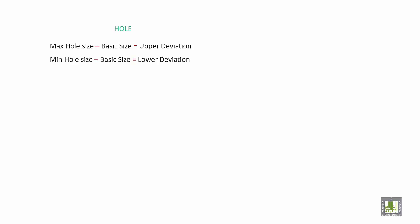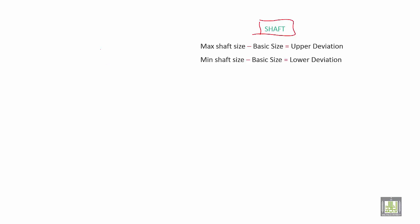When we talk about the hole system and shaft system, if we take the hole, the upper deviation will be maximum hole size minus the basic size which is the nominal. And the lower deviation: minimum hole size minus the basic size which is the nominal. Here the upper deviation for the shaft: maximum shaft size minus basic size. And the lower deviation: minimum shaft size minus basic size.